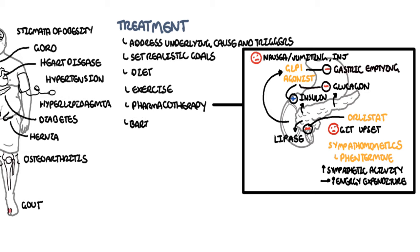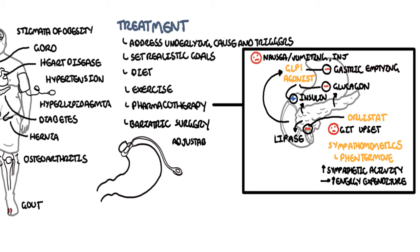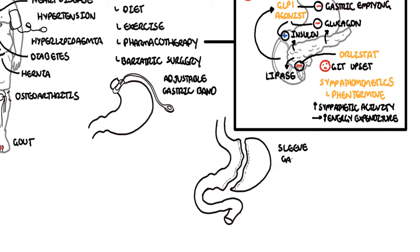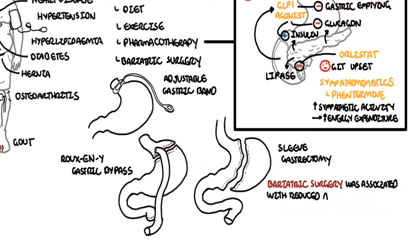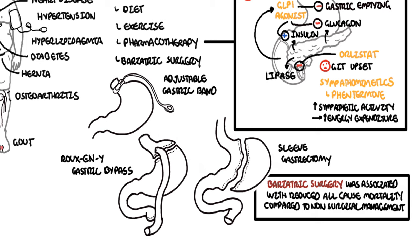Another very important treatment for obesity is bariatric surgery, and there are many types. There's the adjustable gastric band, which suppresses appetite by reducing the amount of food the stomach can take. There's sleeve gastrectomy, where part of the stomach is removed to reduce space for food. There's also the Roux-en-Y gastric bypass. The key takeaway is that bariatric surgery is associated with reduced all-cause mortality compared to non-surgical management for obesity.